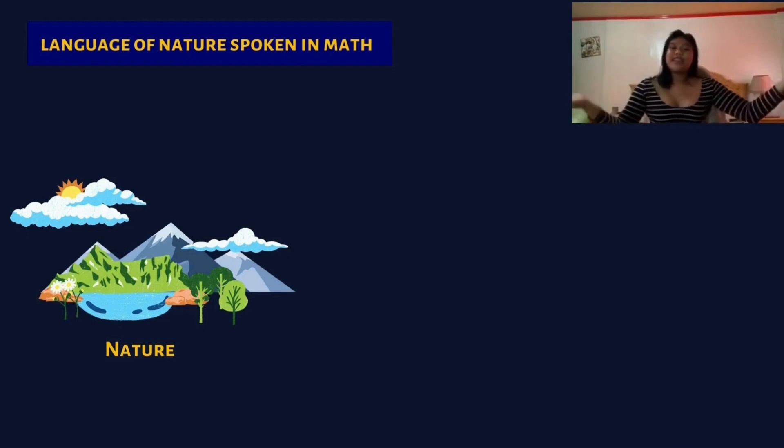Nature is basically saying living things like plants and animals or occasionally processes that are completely irrelevant to humanity. Well, let me tell you about the language of nature spoken in mathematics.